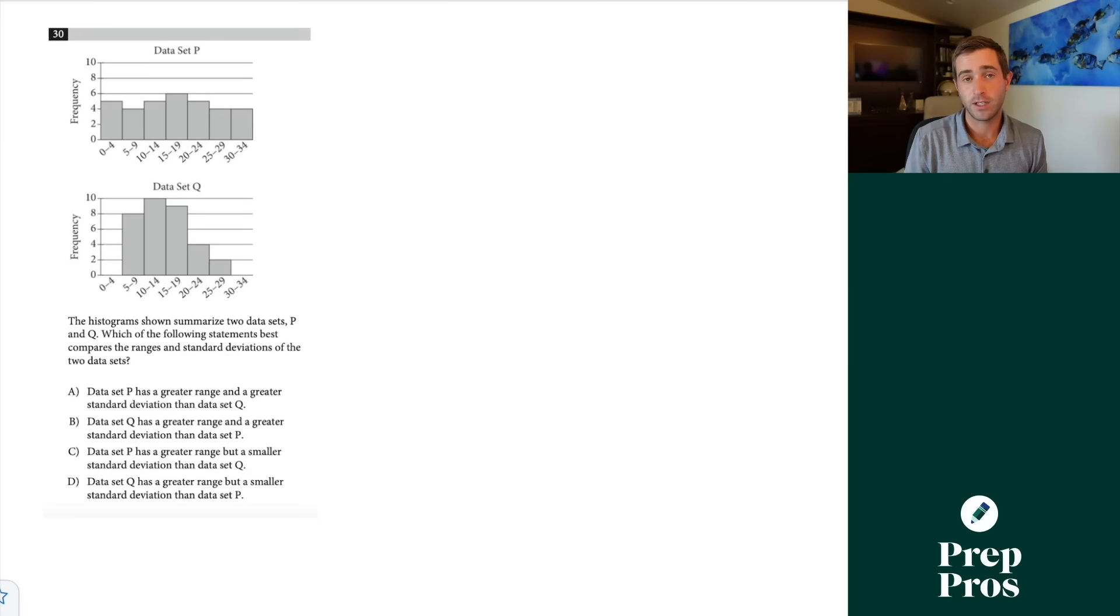Now the next thing you're definitely going to see on your SAT are statistics questions. These most commonly are asking you about standard deviation and margin of error, but there are a handful of other topics that can also pop up. We're going to take a look at this example about standard deviation. Here we see the histogram shown summarize two data sets P and Q. Which of the following statements best compares the ranges and standard deviations of the two data sets?